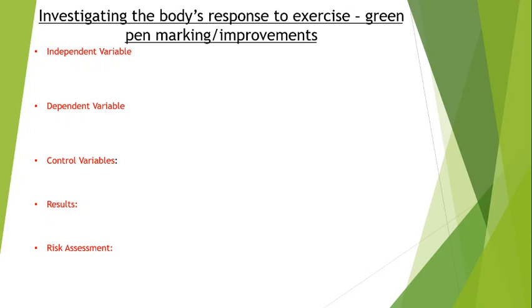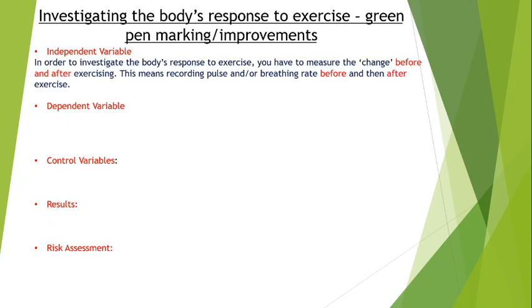Independent variable — you must have changed something in your investigation. This one's actually a little bit weird, and I think students might struggle to realise what they're changing. But chances are, what you're changing is whether you're measuring your heart rate or breathing rate before or after exercise. So the change is: at one point you haven't done exercise, and now you have. So the before-and-after exercising idea could actually be your independent variable.